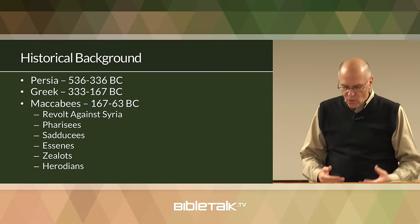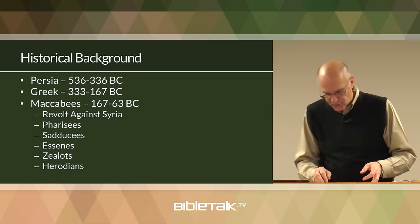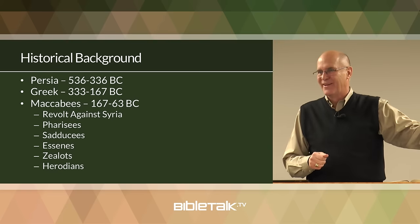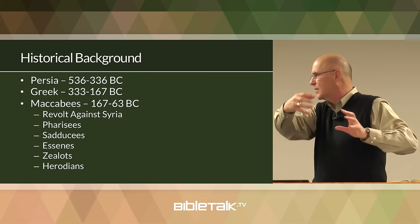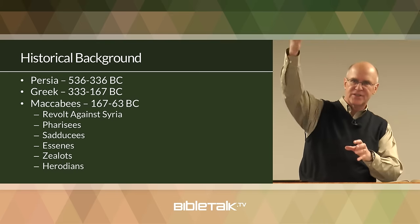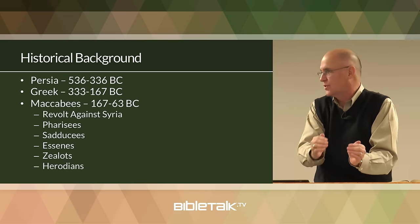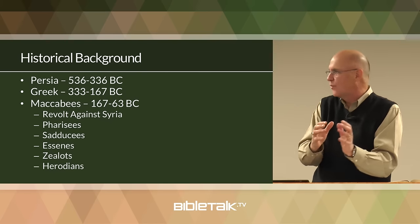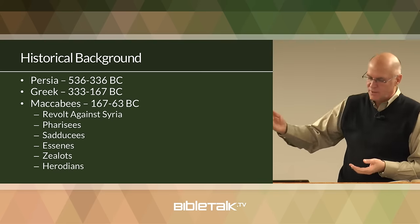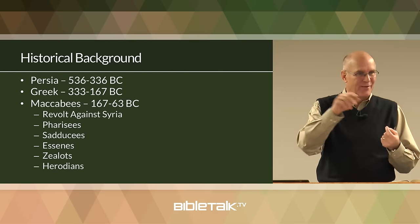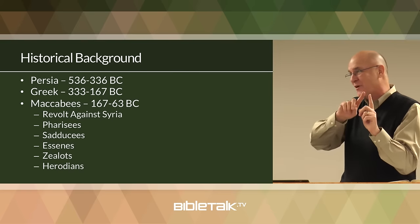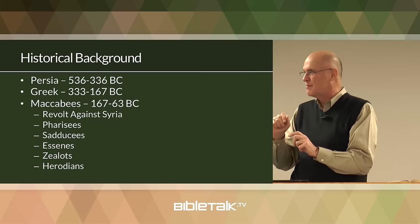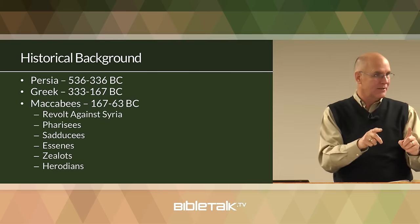The Pharisee party began during the Maccabean period. They were scribes who led the revolt and were considered saviors and protectors of the law against pagan Greek influences. They were the original ones who said, 'Let's go back to the Bible — enough of Greek influence in our life, our religion, our culture.' They were heroes at the beginning — they saved the way of life dictated by the scriptures. Understanding where they started gives great insight into why, a hundred years later, they became Jesus' greatest enemies.